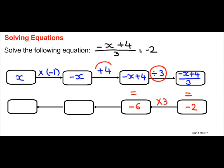Next, opposite of addition of 4 is subtraction of 4. So -6 subtract 4 gives me -10. So -x equals -10.